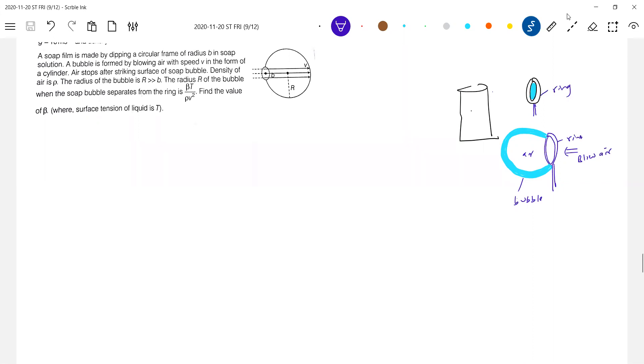Find the value of beta, the radius R of the bubble when the soap bubble separates from the ring. I think what will happen is, as you keep on blowing air at one particular point, the bubble will separate from the ring. What happened to bubble after getting separated?